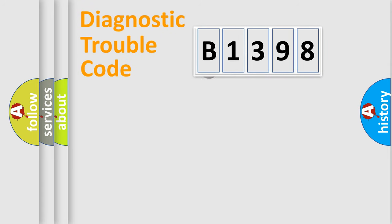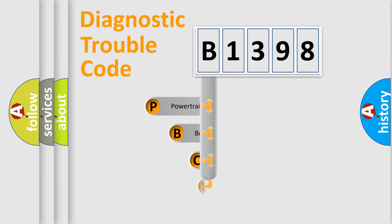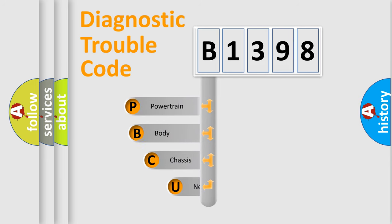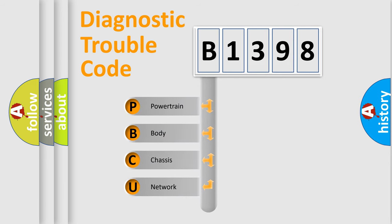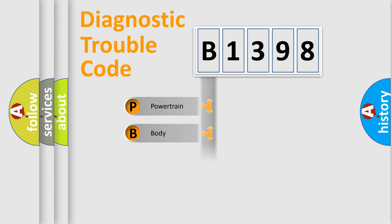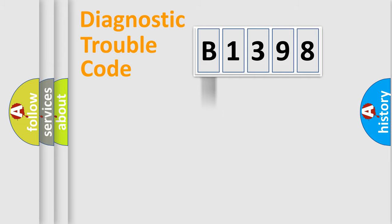Let's do this. First, let's look at the history of diagnostic fault code composition according to the OBD2 protocol, which is unified for all automakers since 2000. We divide the electric system of the automobile into four basic units: Powertrain, Body, Chassis, and Network.